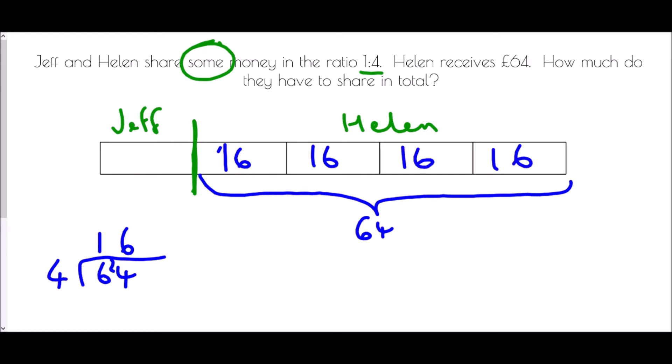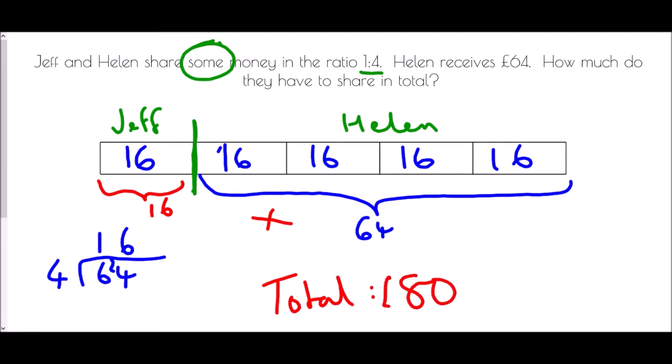With ratio, every piece must be worth exactly the same, so Jeff's single block is also worth 16 pounds. The question asked how much they have to share in total, so we add Jeff's 16 to Helen's 64, giving a total of 80 pounds.